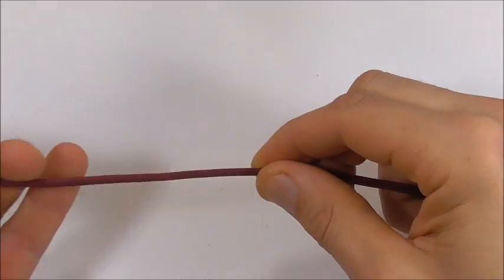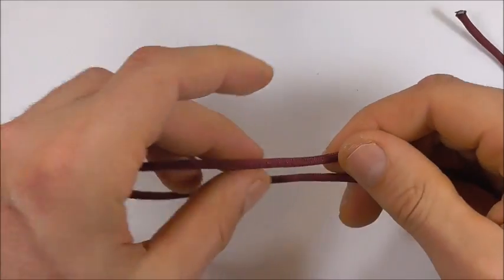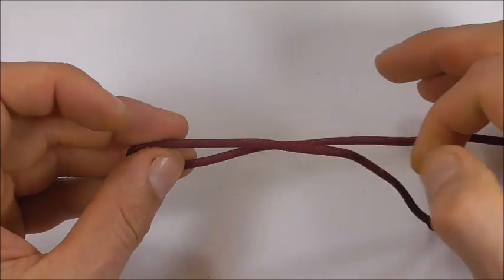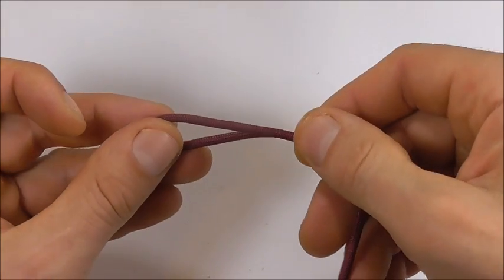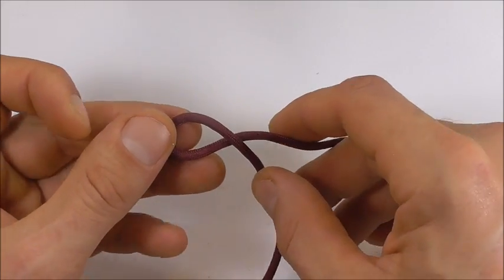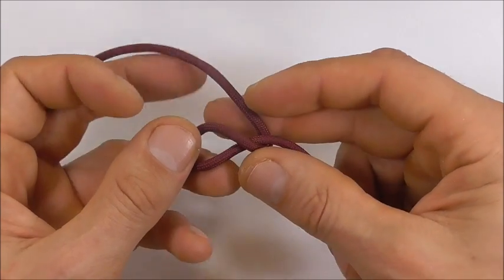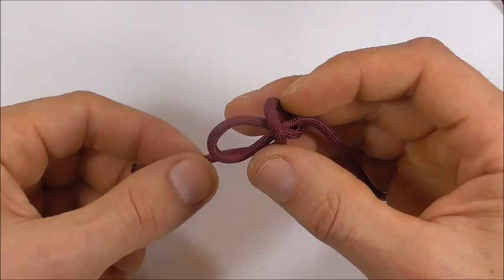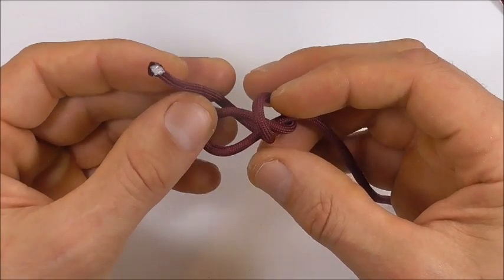Start off with one of your strands and we are going to tie a scaffold knot. Just form a bight and then take that top strand over the bottom, around the back, and then over one more time.